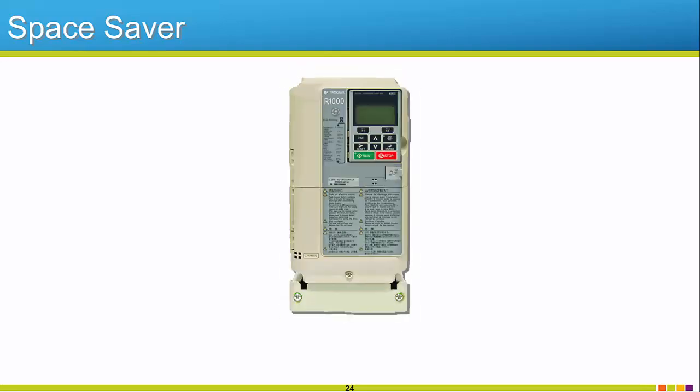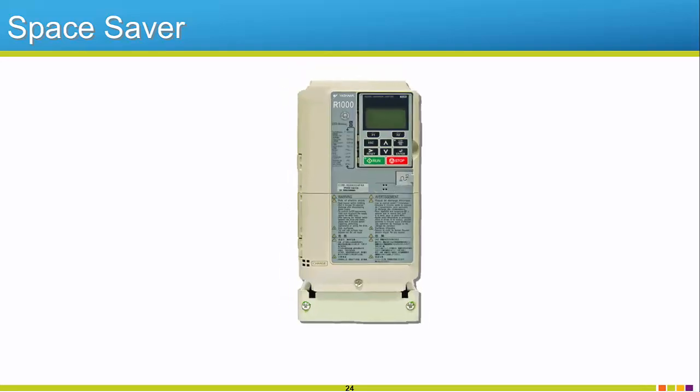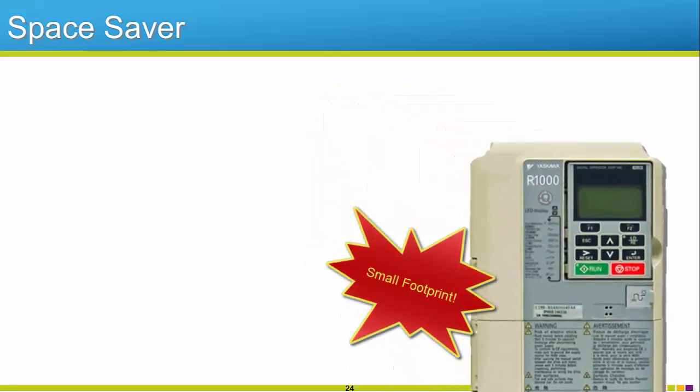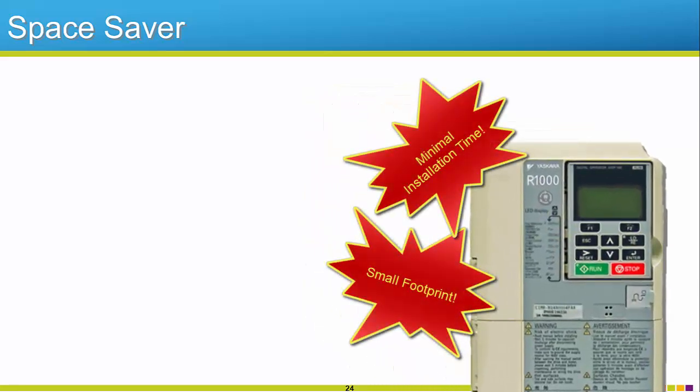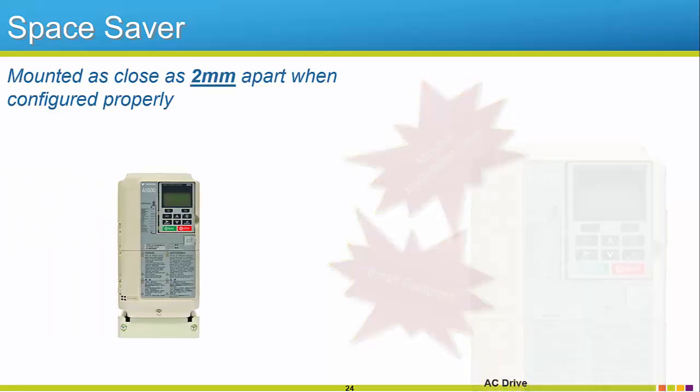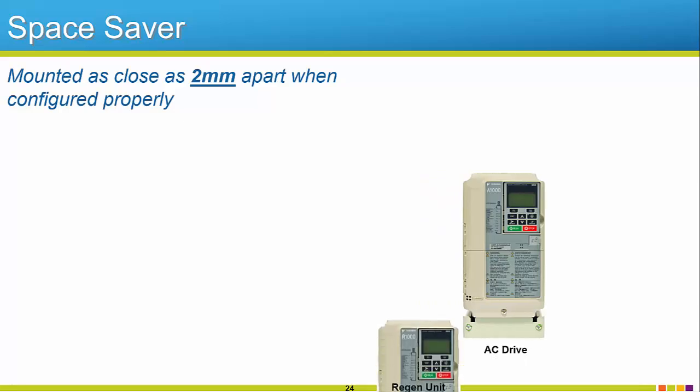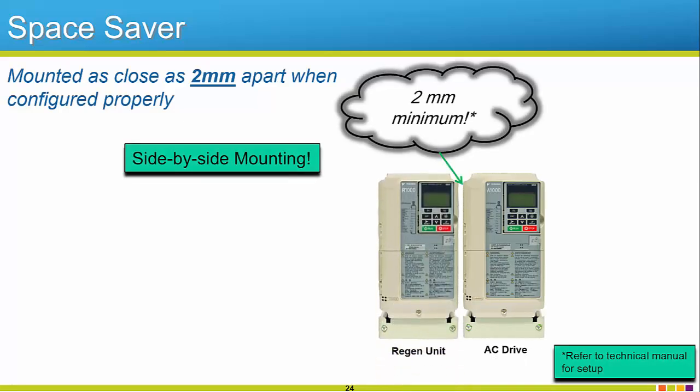Here at Yaskawa, we understand how important and costly space is. The R1000 design features various size and installation reductions resulting in less space needed and a quicker installation time. To sweeten the deal further, the R1000 can be mounted as close as 2 millimeters side-by-side next to the drives it's connected to. This is virtually touching, and will maximize the limited space you may have. Be sure to reference the technical manual for further information about a side-by-side mounting setup.